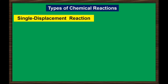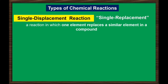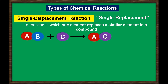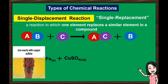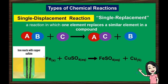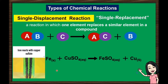Next is single displacement or replacement reaction. It is a reaction in which one element replaces a similar element in a compound. In general, if element C is a metal and replaces element B, which is also a metal in the compound, when the element doing the replacing is a non-metal, it must replace another non-metal in a compound. For example, iron reacts with aqueous copper sulfate and forms iron-2-sulfate and copper. In this reaction, iron is a highly reactive metal, replacing copper, and forming iron-2-sulfate and copper.